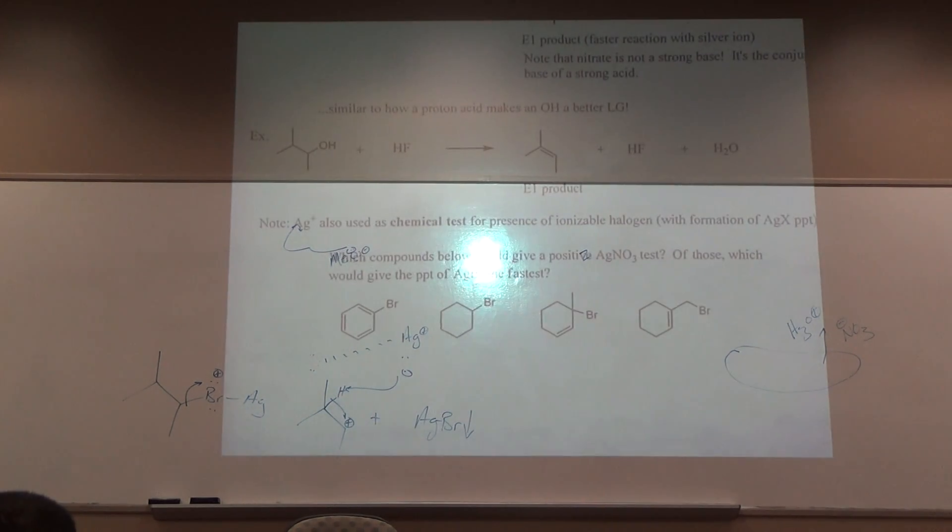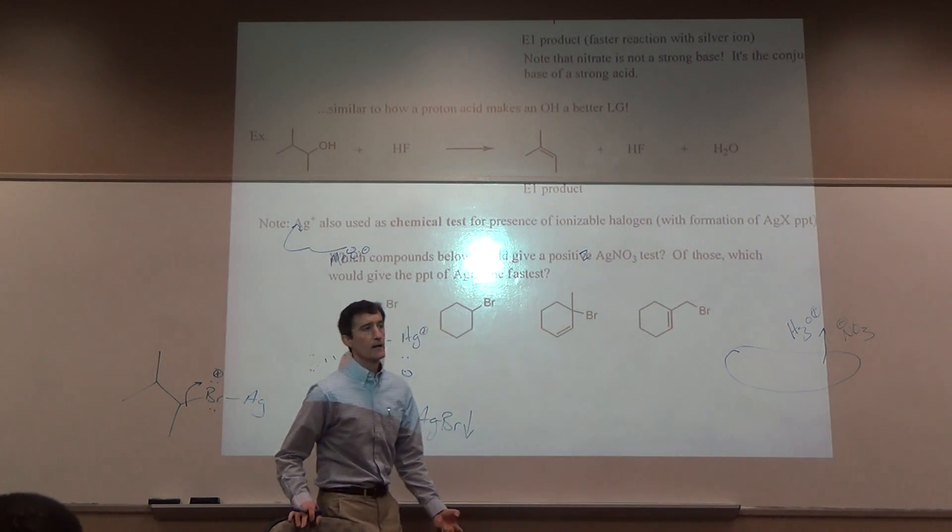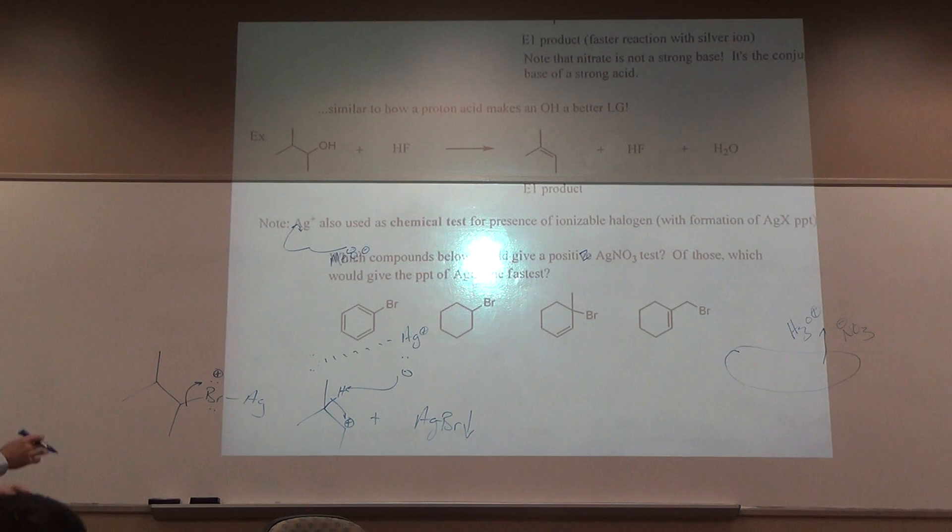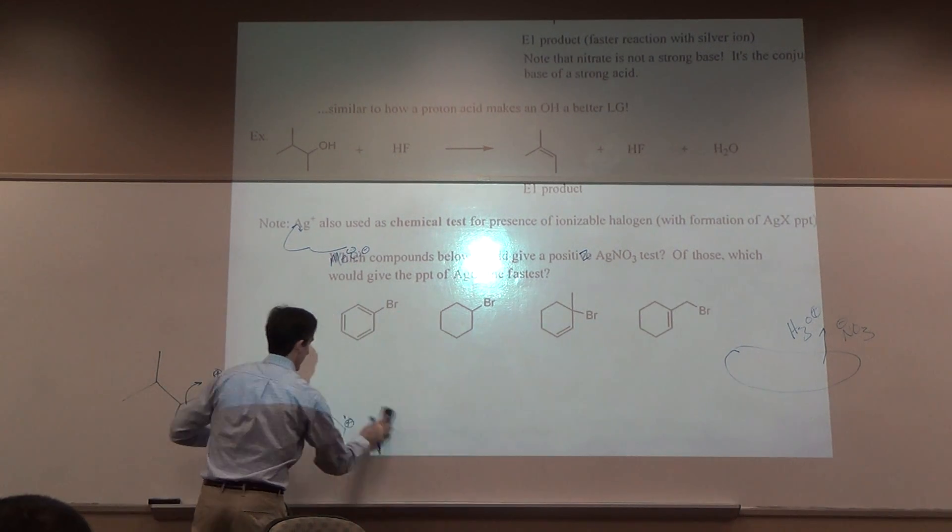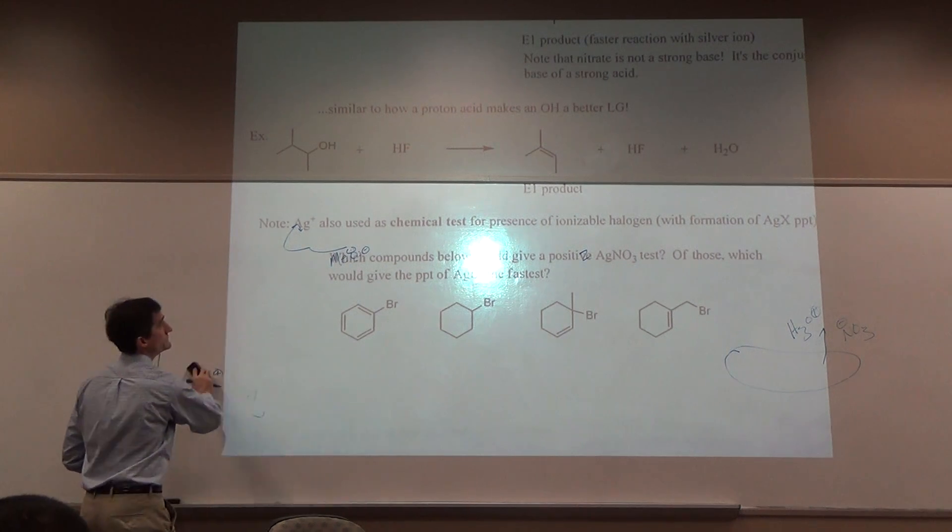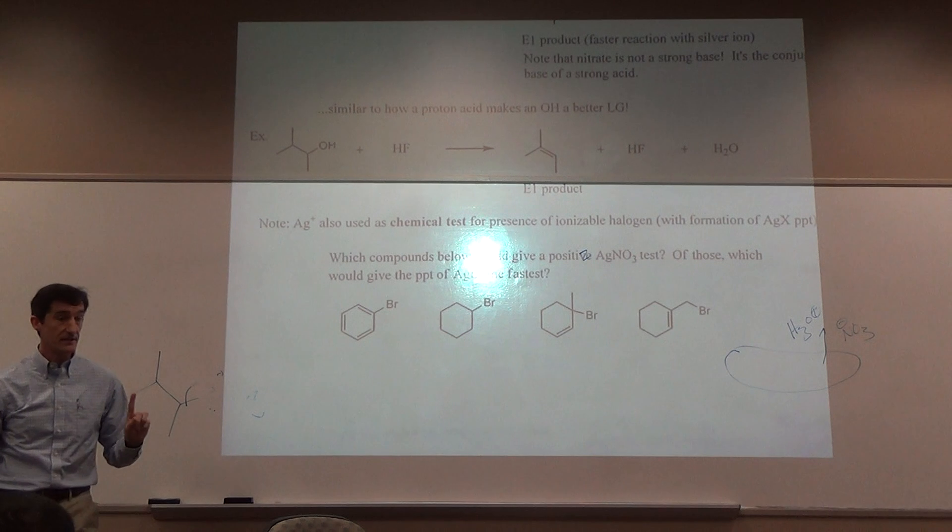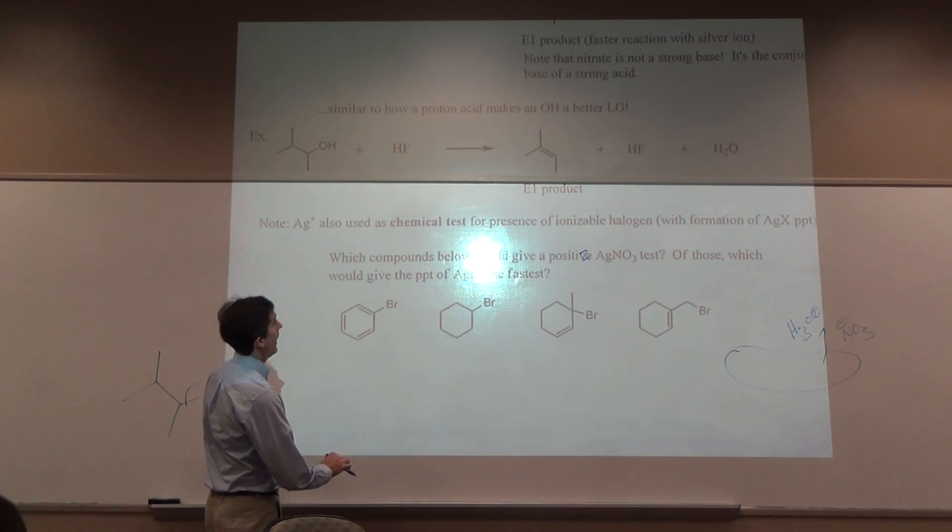It's analogous to making the OH a better leaving group with the proton. The silver ion can also be used as a chemical test, because when you get the precipitate, that's something that you can visually see. It can be a wet chemical test. Now, it's only going to form silver halide if the halogen is ionizable. It's not going to form a precipitate with all halide compounds.